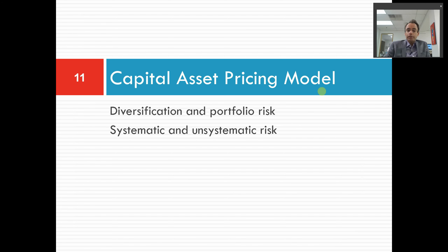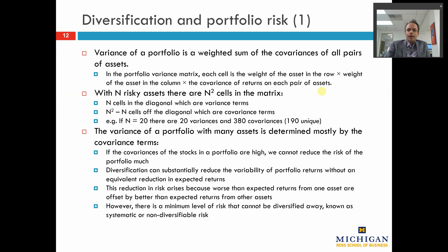Moving on to the capital asset pricing model, having explained this idea of diversification — how does that flow through to the equation we are introducing? Imagine that we take that analysis and expand it to many, many assets in the portfolio. We've already said in the portfolio variance matrix discussion that the variance of a portfolio is a weighted sum of the covariances of all pairs of assets. Remember that if you're thinking about portfolio variance, with any cell of that matrix, you want to have the weight of the asset in the row times the weight of the asset in the column times the covariance of returns on that pair of assets.